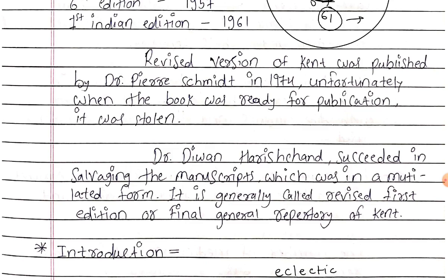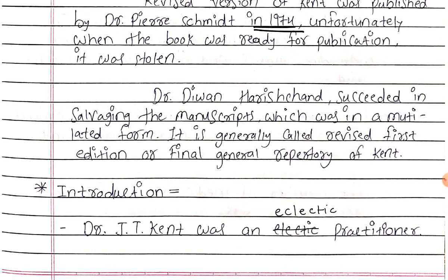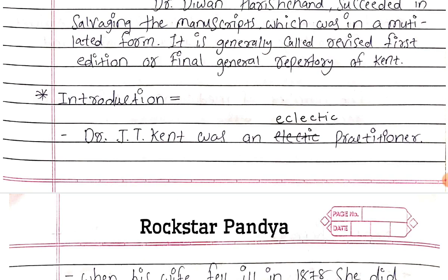The revised version of Kent was published by Dr. Pierre Smith in 1974 — again very important. Unfortunately, when the book was ready for publication, Dr. Devan Harishan succeeded in salvaging the manuscripts which were in a mutilated form. It is generally called the revised first edition or the final journal repertory of Dr. Kent.